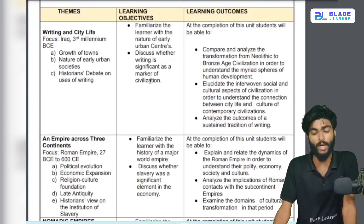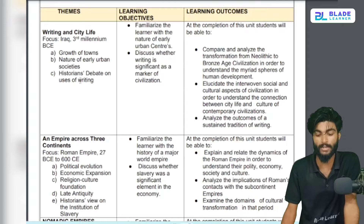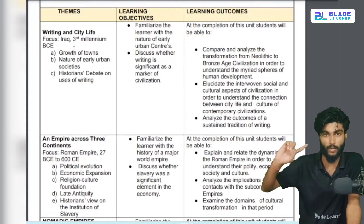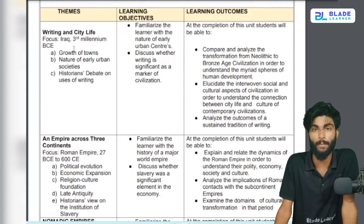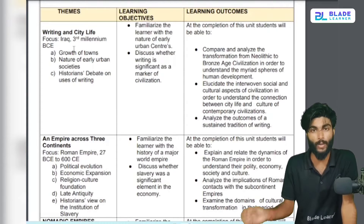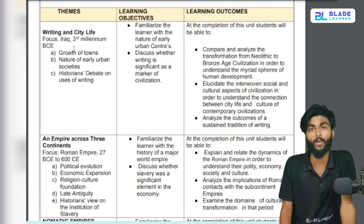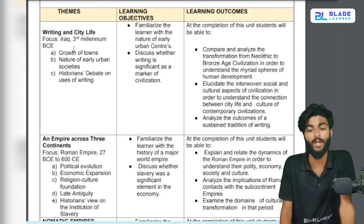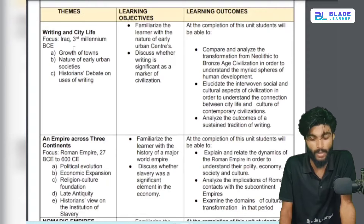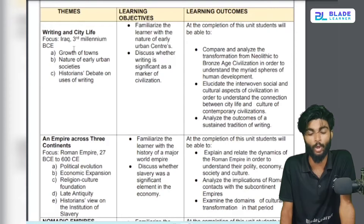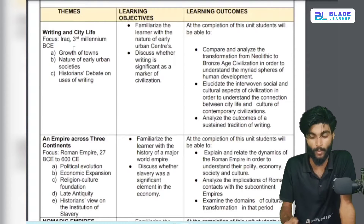The new syllabus is starting with the second chapter: Writing and City Life. When you go to Class 12, you will study the first chapter. In Class 11, you will study one of the oldest civilizations in the world — Mesopotamia. There are two major cities: Uruk and another. You will study this chapter in detail.